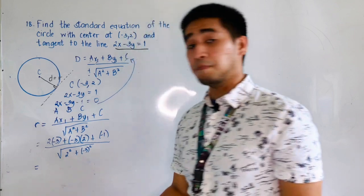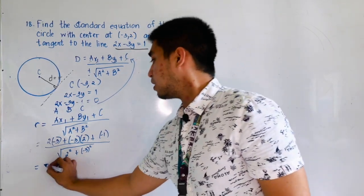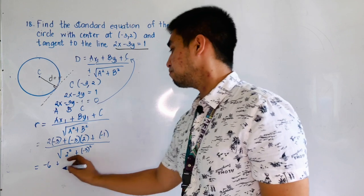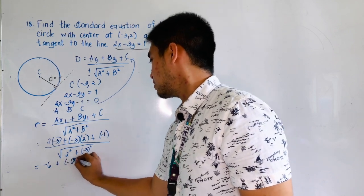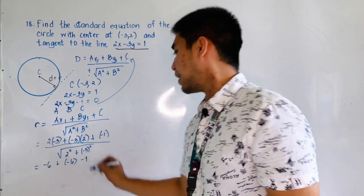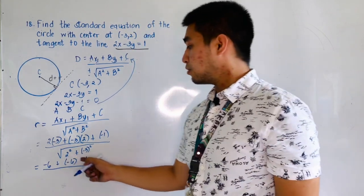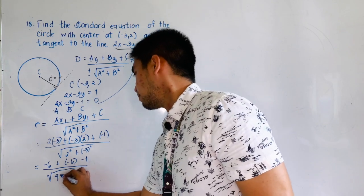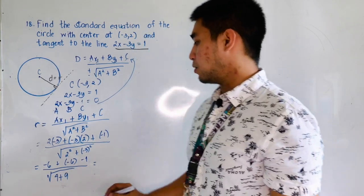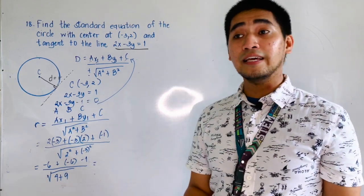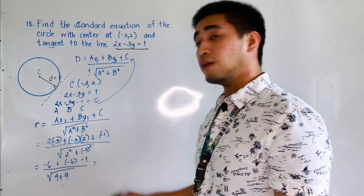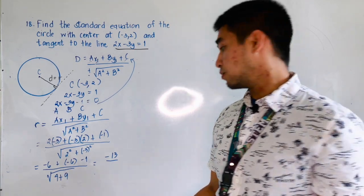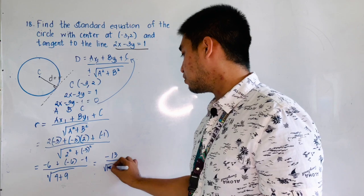Let us simplify. 2 times negative 3 is negative 6. Negative 3 times 2 is also negative 6. Plus negative 1 gives the numerator. In the denominator, 2 squared is 4 and negative 3 squared is 9, so we have the square root of 4 plus 9. The numerator is negative 6 plus negative 6, which is negative 12, minus 1, giving negative 13. The denominator is the square root of 13.